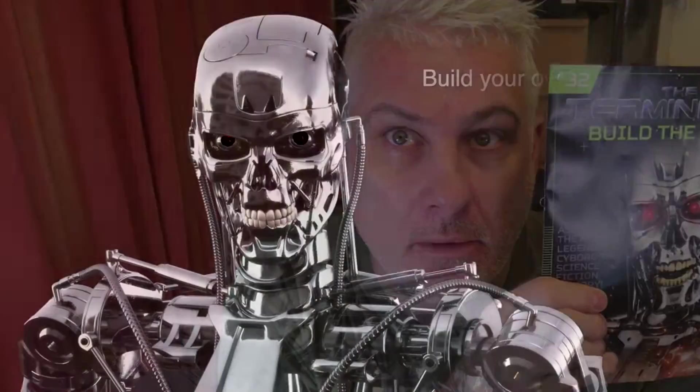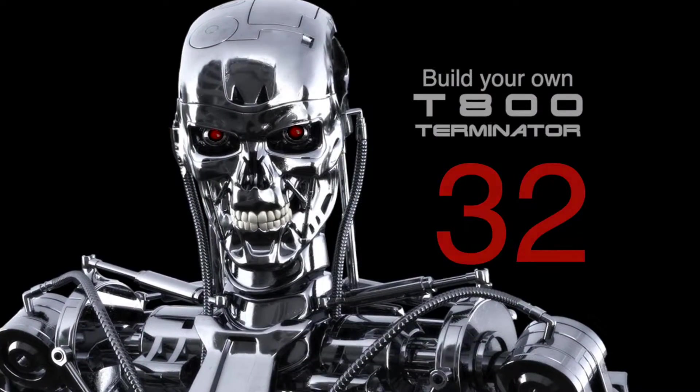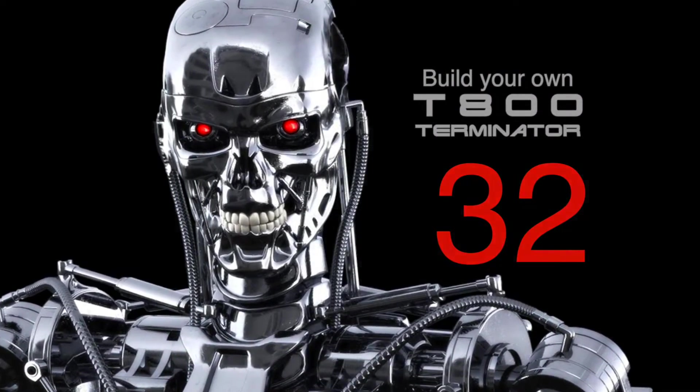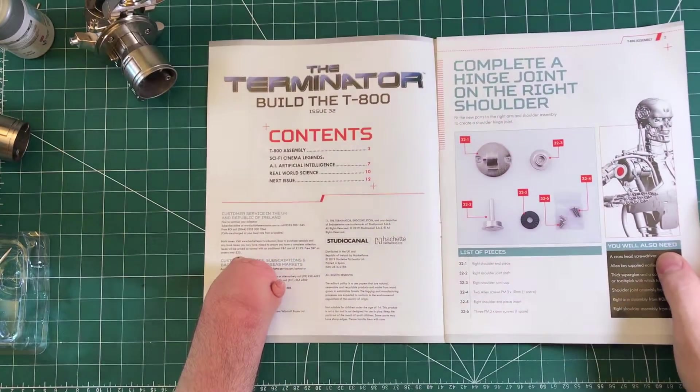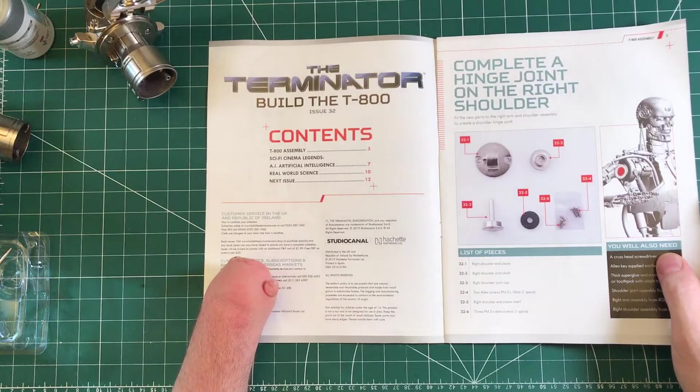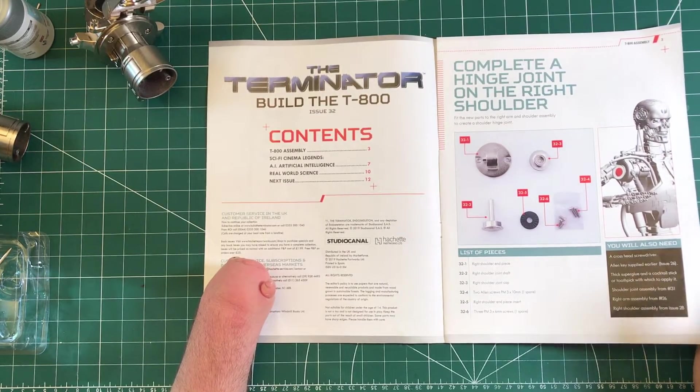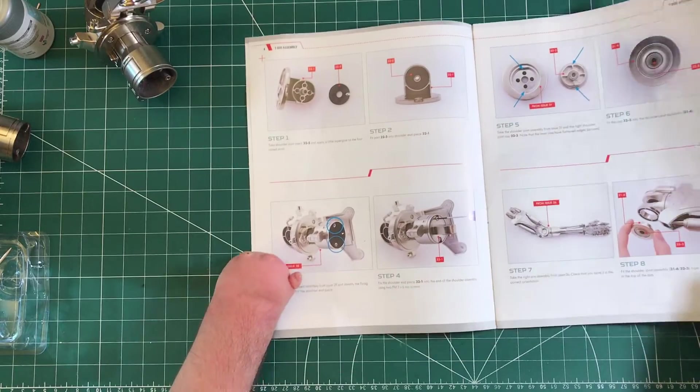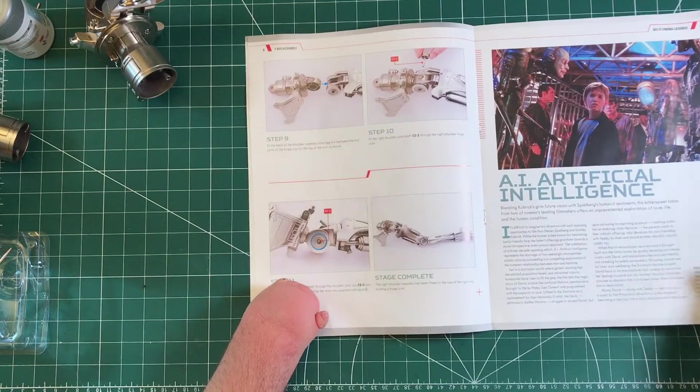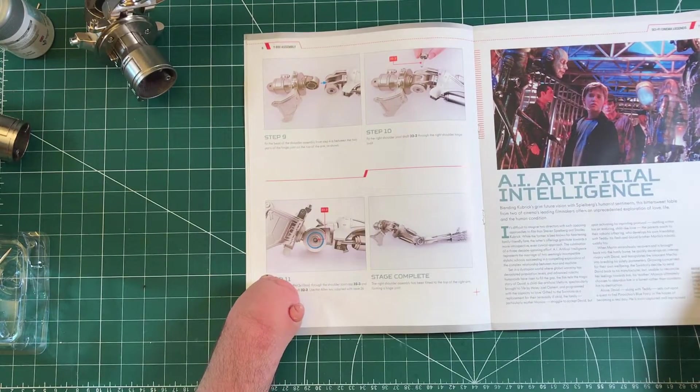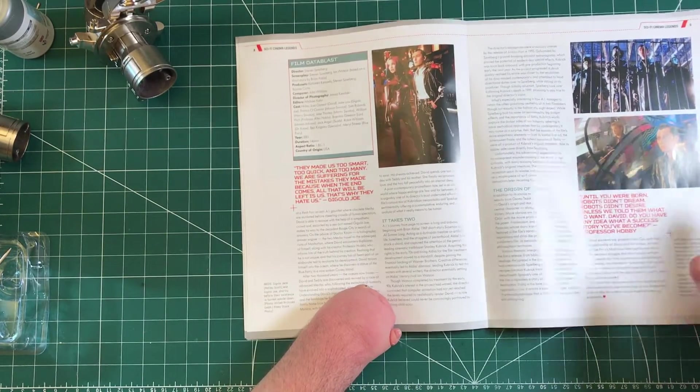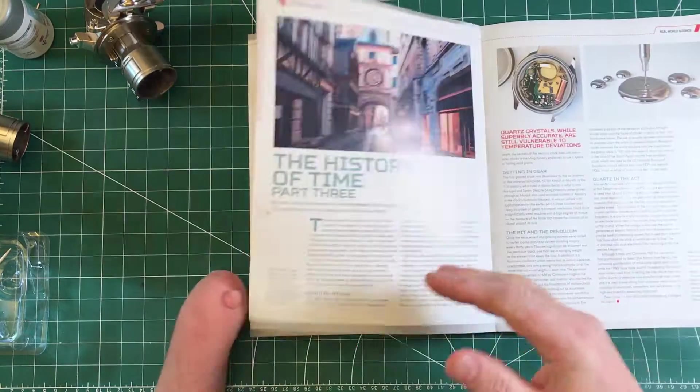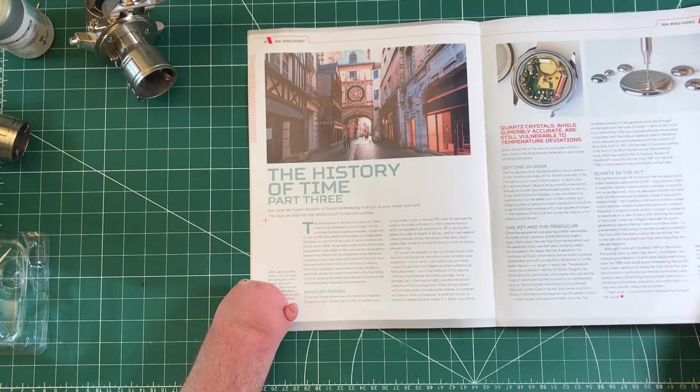Issue 32. Here we go. So we're going to complete a hinge joint on the right shoulder. There's also an article about artificial intelligence, AI the film, and the history of time part 3.